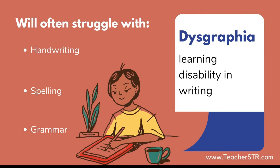Dysgraphia is the term associated with a learning disability in writing. It includes both the physical act of writing and the quality of written expression. Students with dysgraphia may demonstrate difficulties in one or more of the following areas: handwriting and pencil grip; letter, word, or sentence formation; spelling; generation; planning; drafting and organization; grammar and mechanics; rate and automaticity; as well as writing expression.